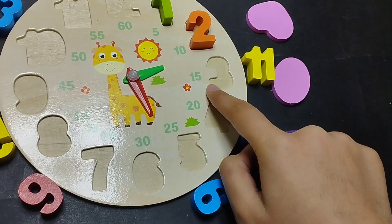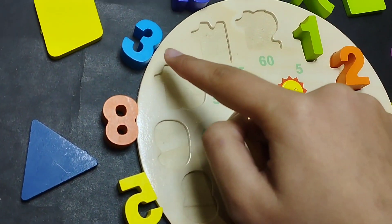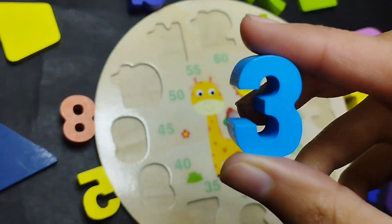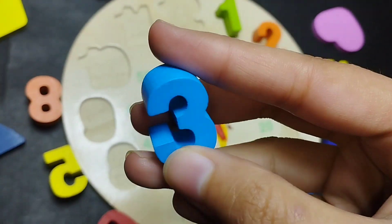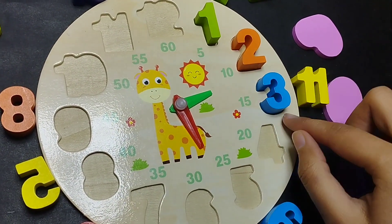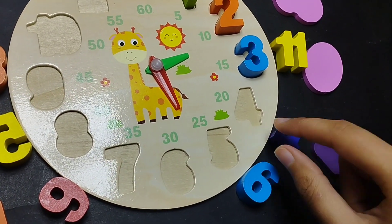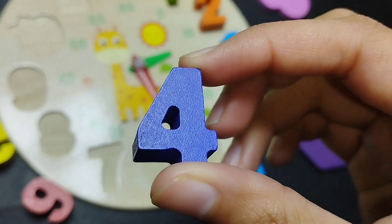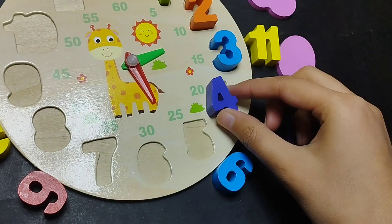Let's find the number 3. Number 3. This is number 3. Number 3. Number four. This is number four.